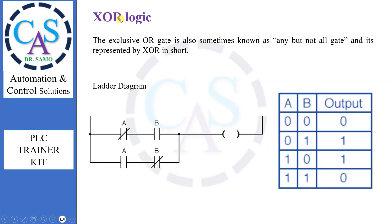Move further for XOR logic. The exclusive OR gate is also sometimes known as the 'any but not all' gate, and it is represented by XOR in short. The ladder diagram exhibits the XOR logic. From the table: if both inputs are low, the output will be low. If input 1 is low and input 2 is high, the output will be high. If input 1 is high and input 2 is low, the output will be high. If both inputs are high, the output will be low.